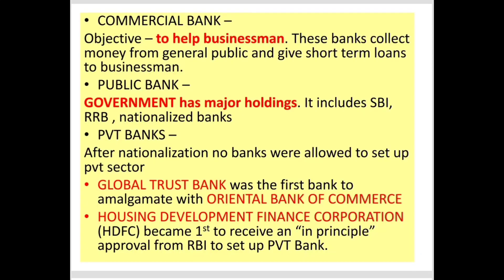Commercial banks aim to help businessmen — they collect money from the public and give short-term loans to businesses. Commercial banks are of two types: public and private. In public banks, the government holds majority holdings — this includes SBI, RBI, and nationalized banks. After nationalization, no banks were allowed to set up in the private sector. The Global Trust Bank was the first new private bank, which later amalgamated with Oriental Bank of Commerce. HDFC Bank, after Housing Development Finance Corporation, was the first bank approved by RBI as a private sector bank.